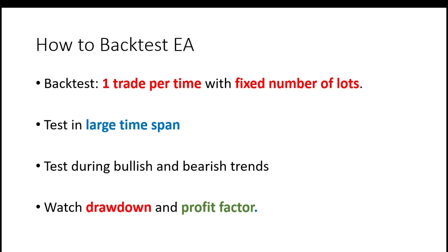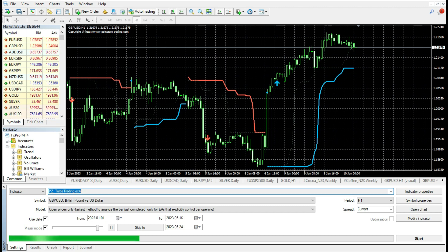The fourth rule: when you watch how your expert advisor performs, I like to watch drawdown and profit factor. Profit factor is very valuable, but drawdown is much more important. You can have very small profits in dollars, but if you have minimal drawdown, that expert advisor can be extraordinarily good. So the rules are: one trade per time with fixed lots, large time span, testing during both bullish and bearish trends, and always watch drawdown and profit factor.